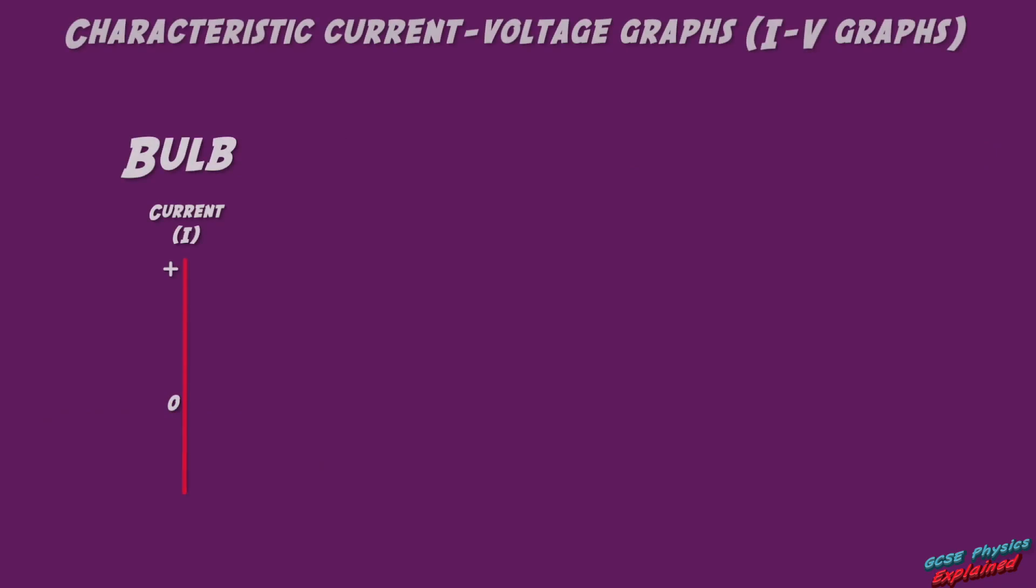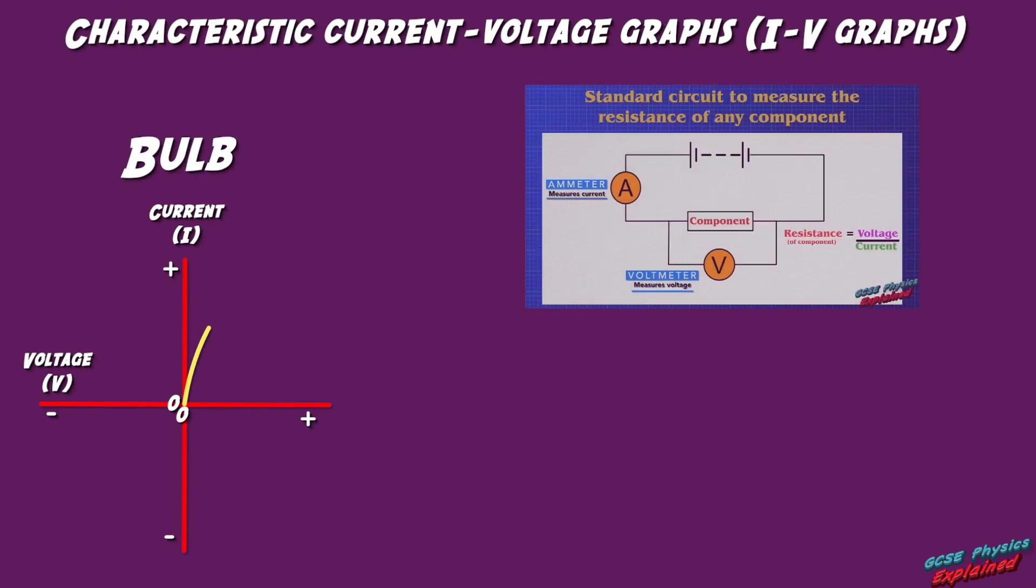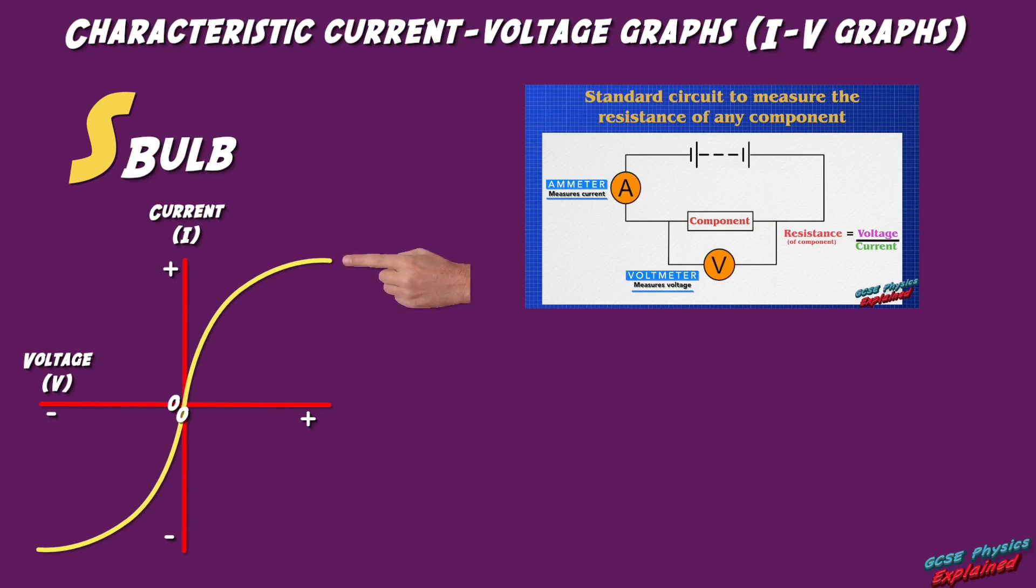Now let's look at the IV graph for a filament lamp, otherwise known as a bulb, or as I like to call it, a s-bulb. Hey! I say it to my students. Let's all say it together. S-bulb. S-bulb. I say it like this because it helps them to remember that it's an s-shape, as you can see.